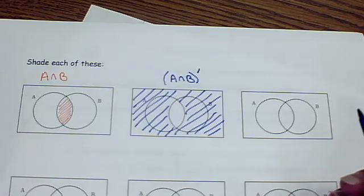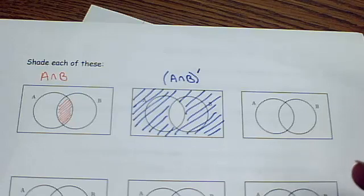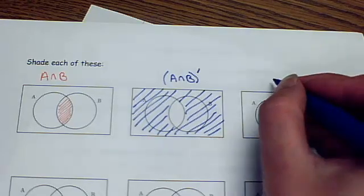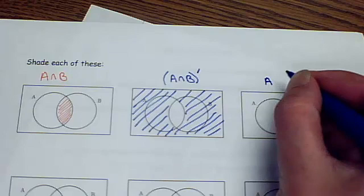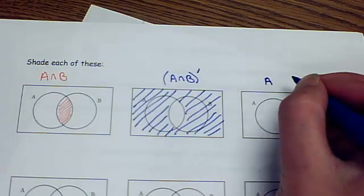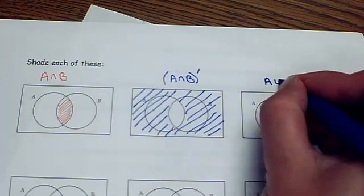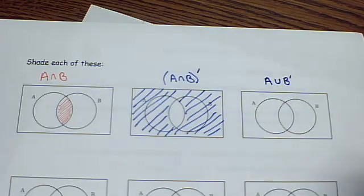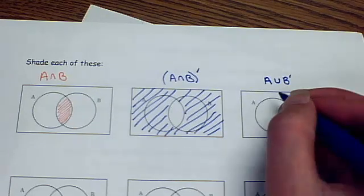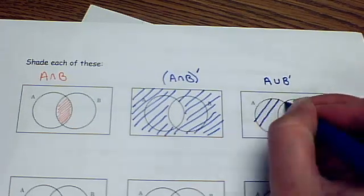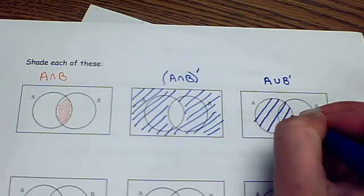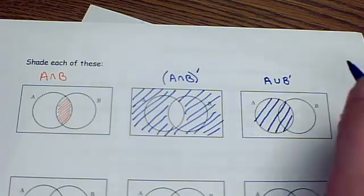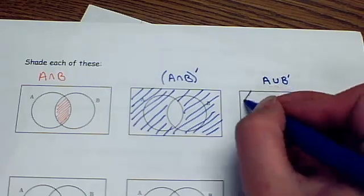All right, what about if I had A, oh, this is a good one, unioned with not B. Okay, so union is different than intersection. I'm going to take everything that's in A, including that part that was B, and union it with the rest that's not B.